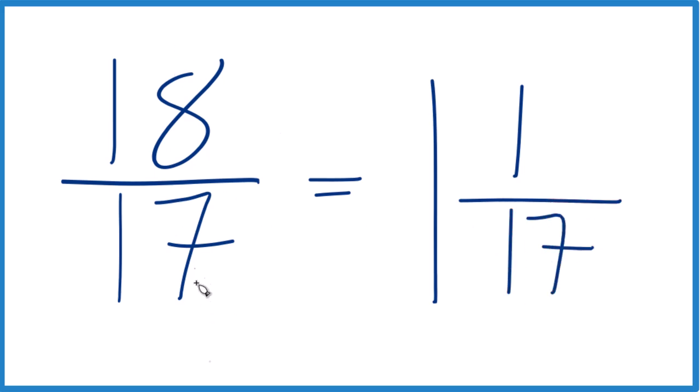So 18 seventeenths is equal to 1 and 1 seventeenths, and you can check that. 1 times 17, that's 17, 17 plus 1, that gives us the 18, and the denominator, we just keep that the same.